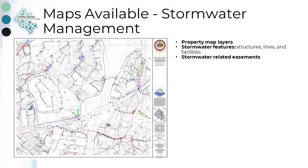Stormwater management maps display all the property map layers plus the storm drainage system, which includes stormwater features and stormwater-related easements. Stormwater is water that originates from rain, including snow and ice melt. Features include structures, lines, and facilities such as manholes, pipes, and pervious pavement.